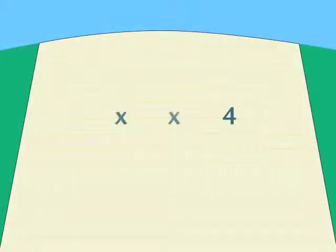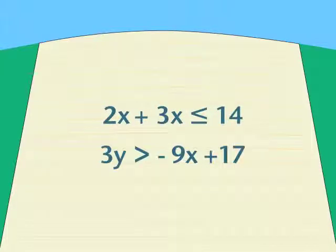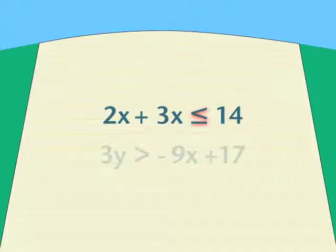In other modules, we've already seen lots of equations in two variables. We've manipulated them, we've solved them, and we've graphed them too. We have also seen inequalities in two variables. They look a lot like equations, except that they never have a plain old equal sign. They always have a sign for less than or greater than. You may not have worked with inequalities in a while, so let's do a quick review.